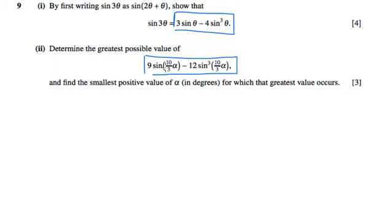If we say that theta, this theta here is 10 over 3 alpha. So theta is the same as 10 over 3 alpha, and then we've got 3 lots of this.